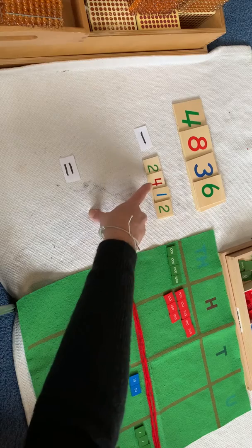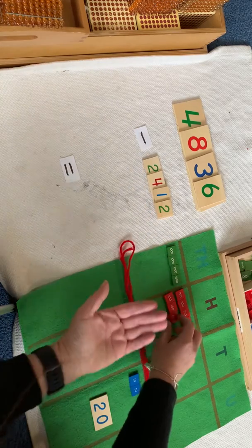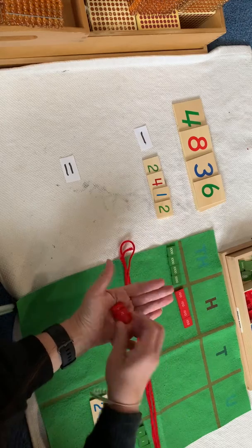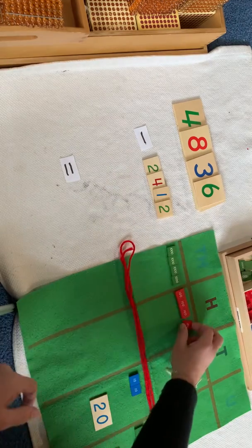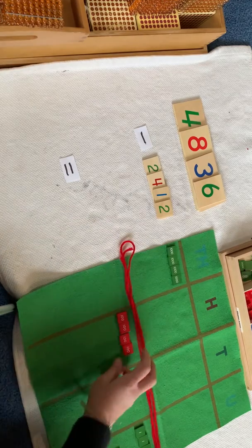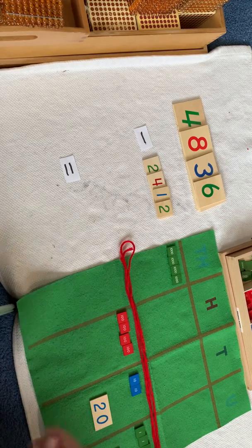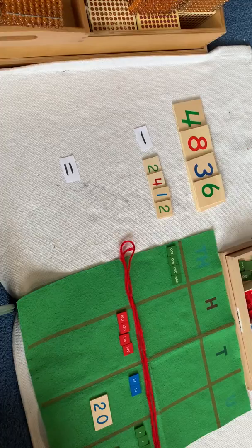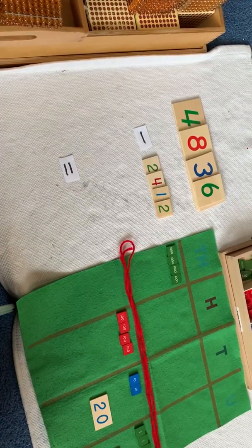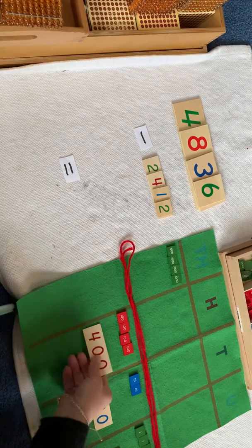We're going to move over to our hundreds. We need to take away 4. Take away 1, take away 2, take away 3, take away 4, and bring down the answer. We have 4 hundreds as our answer. 4 hundreds. Here it is.